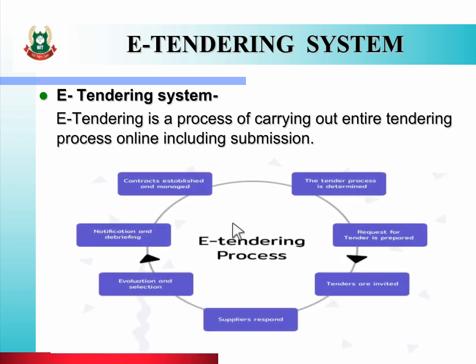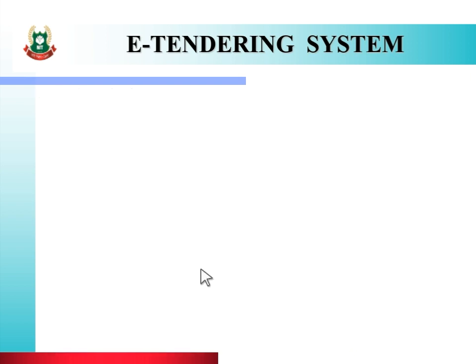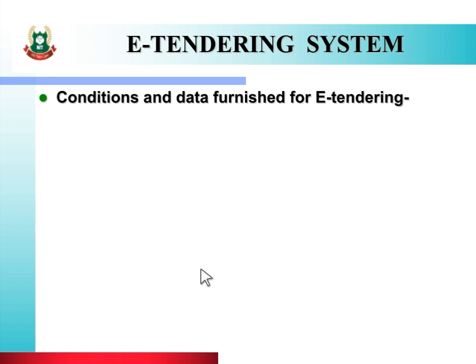See the picture of the e-tendering process. The e-tendering process contains various necessary steps. If an e-tender notice is published online, तो उसमें कौन-कौन से points रहना चाहिए — conditions and data furnished for e-tendering, that is, necessary information published in e-tendering.